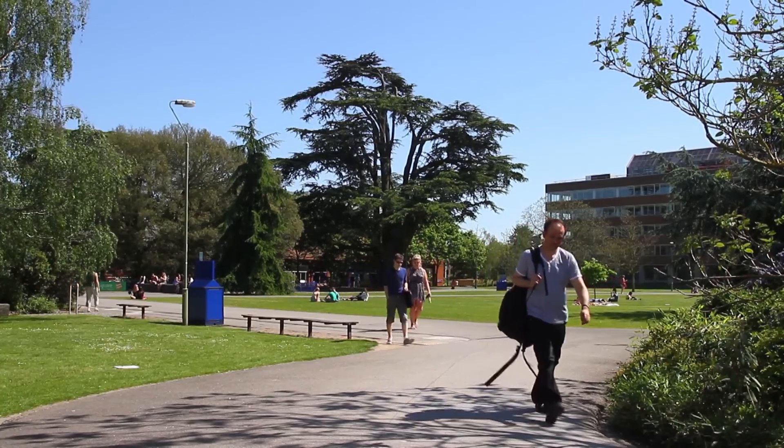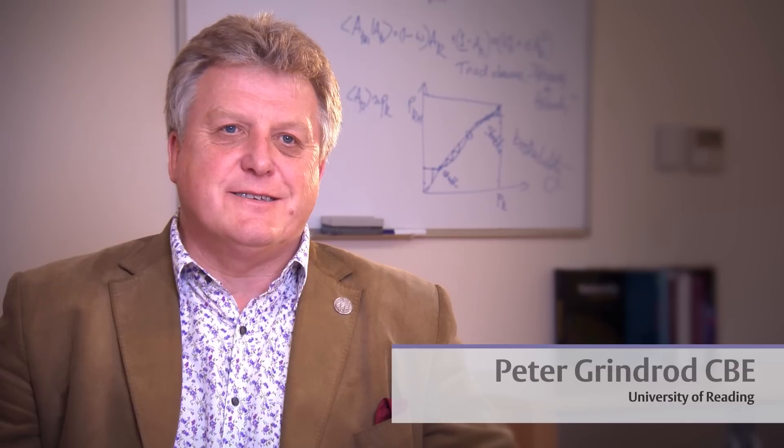The Centre for Mathematics of Human Behaviour is a research group here at the University of Reading in the Department of Mathematics and Statistics. We're a group of researchers who are funded with a mixture of public funds and also industrial and commercial funds to look at complex systems which involve groups of people.